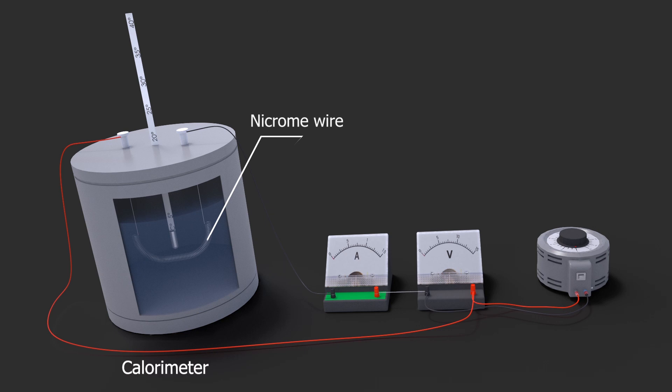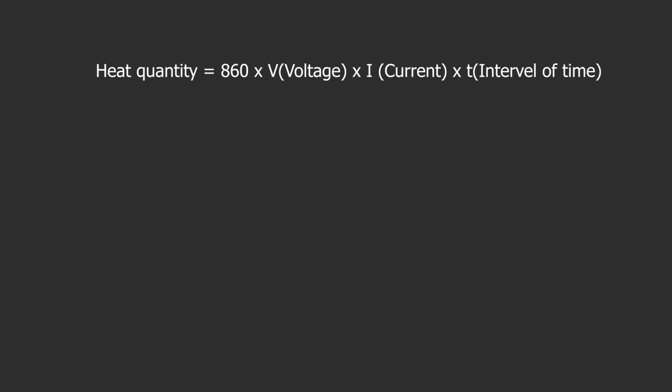An experiment measures the heat quantity of water using a calorimeter. Voltage across the wire is increased by a variac, and an ammeter and voltmeter measure current and voltage. The variac scale is set to adjust the voltage and current value of the nichrome wire. Current is passed through periodically and heat quantity from the nichrome wire is measured. If voltage, current, and time increase, heat quantity will also increase. They are expressed by the relation: heat quantity equals 860 multiplied by V (voltage) multiplied by I (current) multiplied by T (time interval). This is called Joule's law.